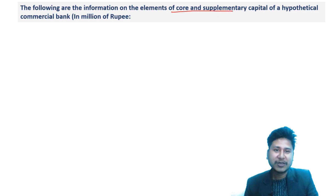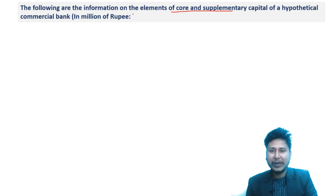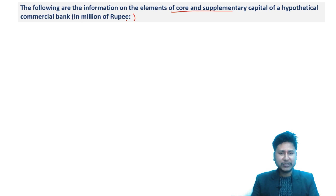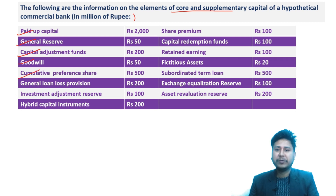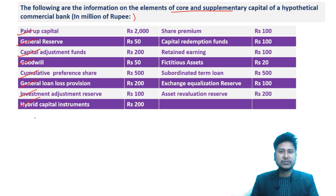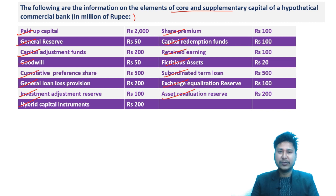The first question covers the limit of core and supplementary capital for a commercial bank. The key data includes capital components such as Goodwill, Cumulative Preference Share, General Loan Loss Provision, Investment Adjustment Reserve, High-Rate Capital Instrument, Share Premium, Capital Redemption Fund, Retained Earnings, Fixed Assets, Sub-ordinated Term Loan, Exchange Equalization Reserve, and Asset Revaluation Reserve.